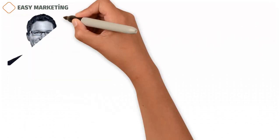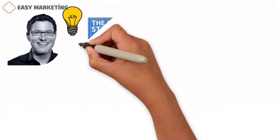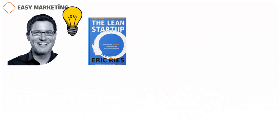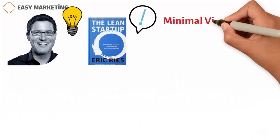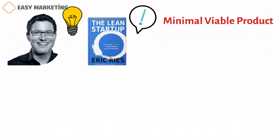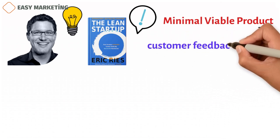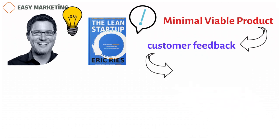Eric Ries' definition of minimum viable product, MVP. Eric Ries helped spread the idea of the MVP. In his book, The Lean Startup, Ries used the idea of the MVP to show how important it is to learn during the product development process. The minimal viable product is the version of a new product that lets a team get the most customer feedback with the least amount of work.